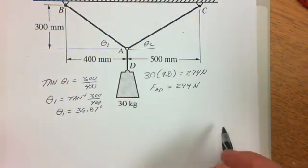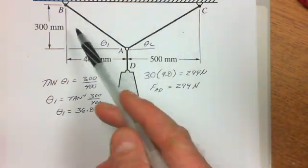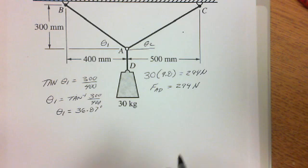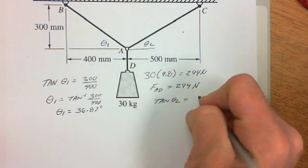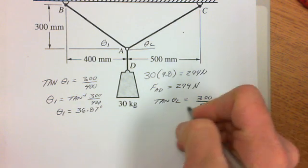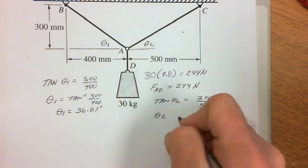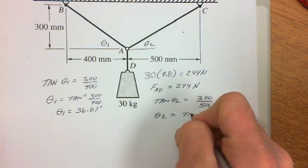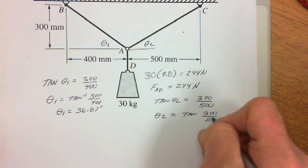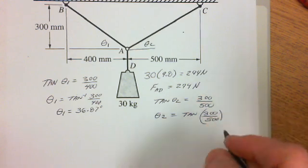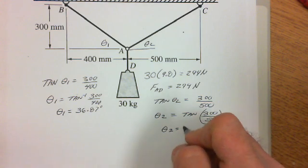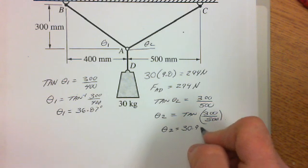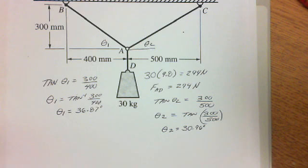Now we want to find theta 2. Our rise here is also 300 on this side. So the tangent of theta 2 equals 300 divided by 500. Taking the inverse tangent of 300 divided by 500, theta 2 equals 30.96 degrees. That information is critical — you have to find the angles first before you can continue with this problem.